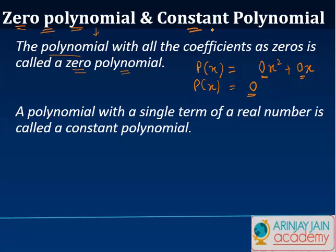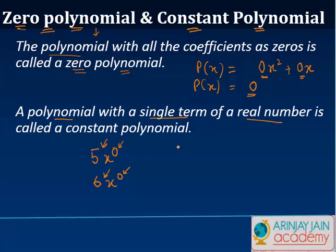A constant polynomial is a polynomial with a single term of a real number. So if you have a polynomial written as five or six, there is just a single real number, and the degree of x in this case is zero. Five can be written as 5·x⁰, so the degree is zero, and this polynomial has a single term of a real number.